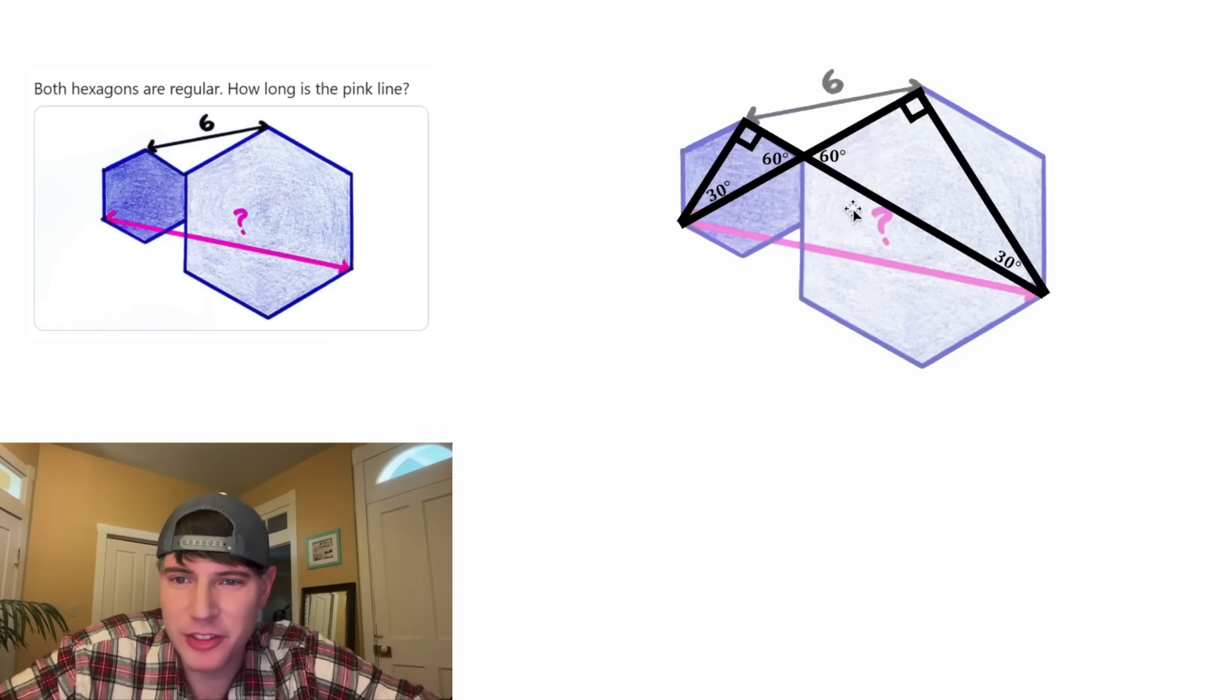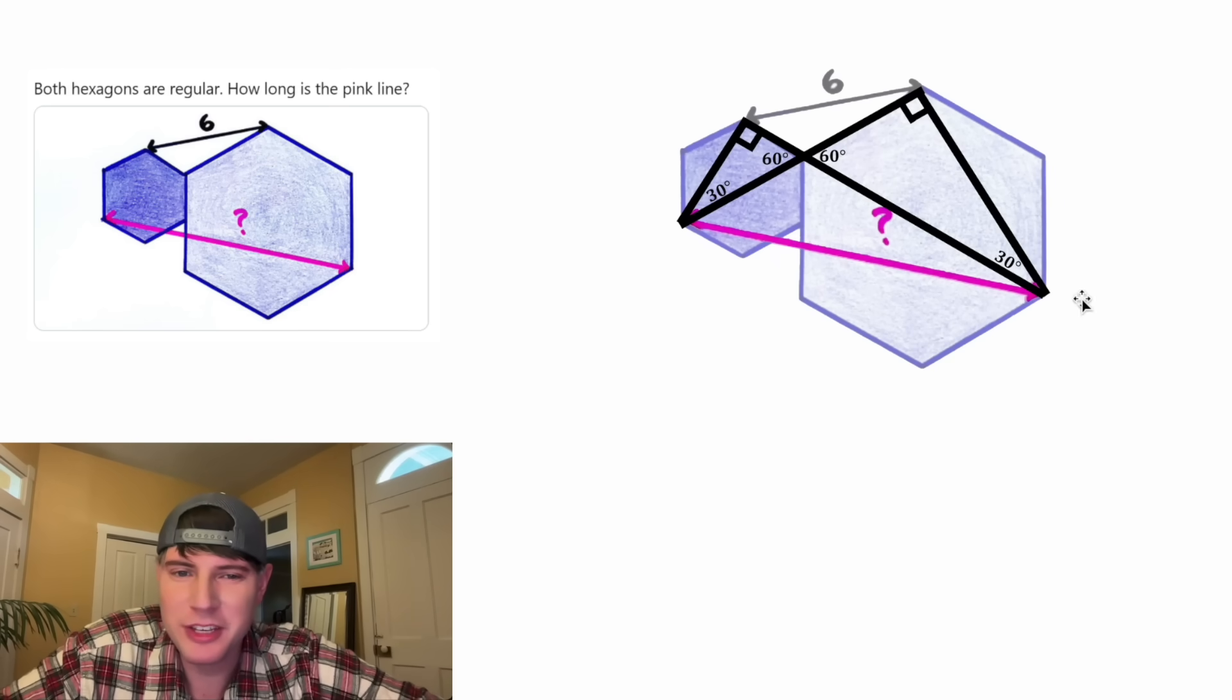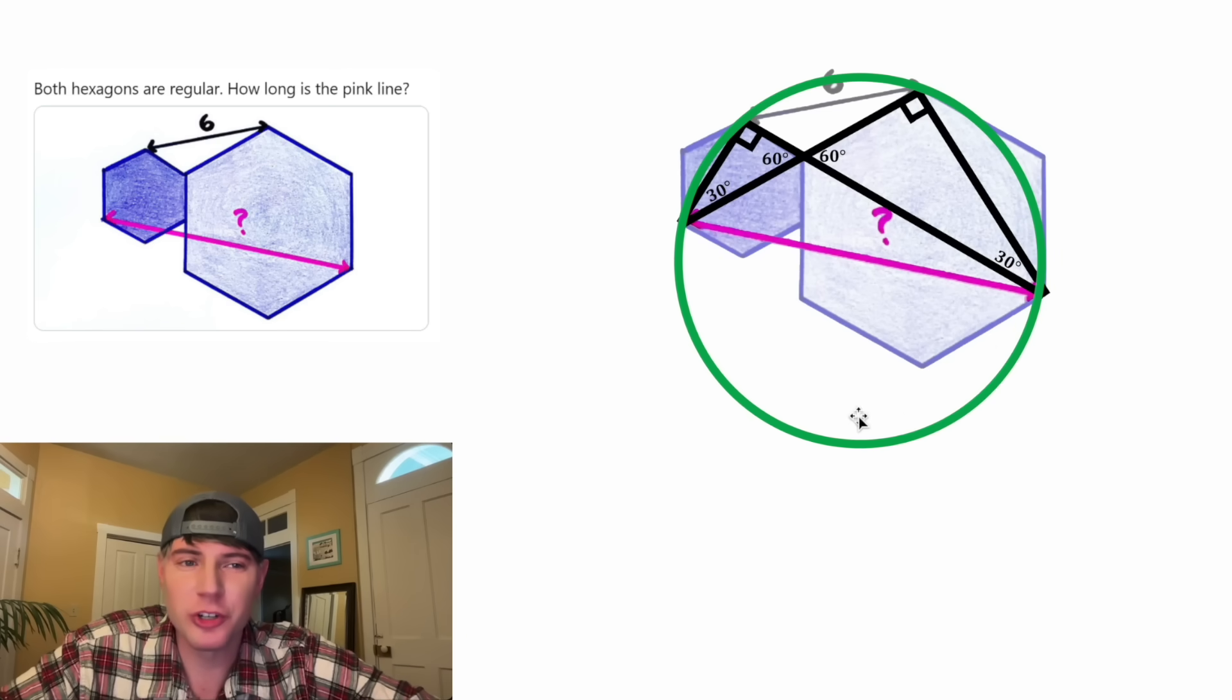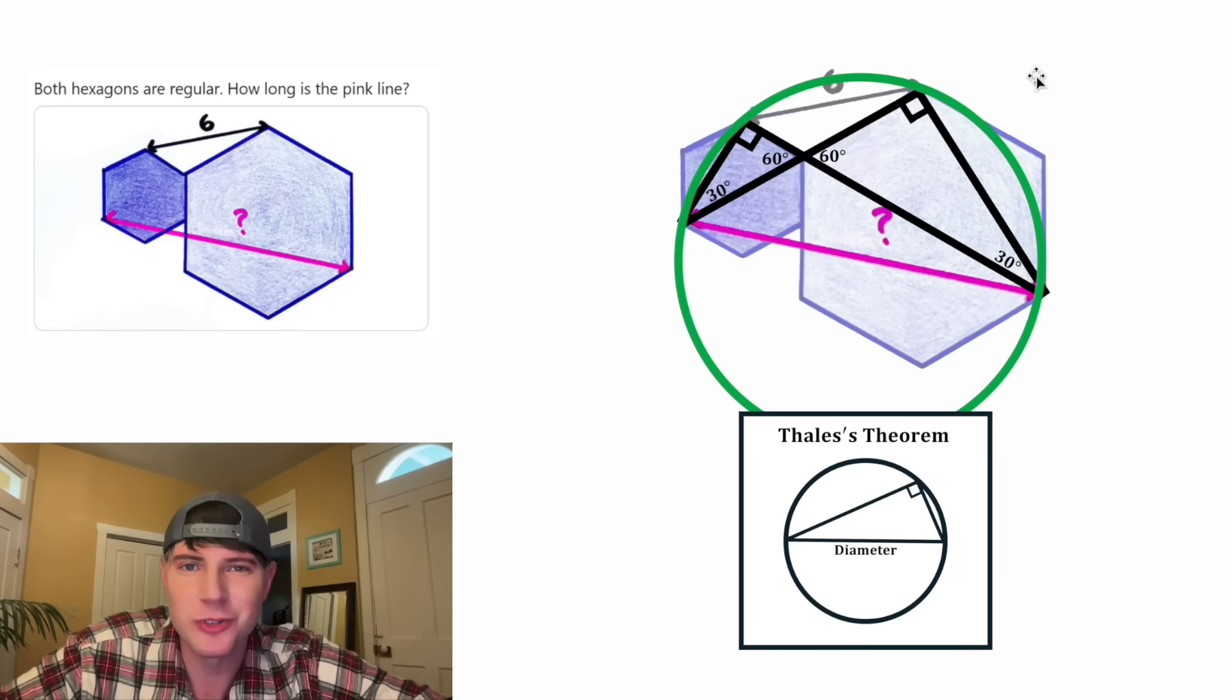And something else really cool is happening. Both of these right angles subtend this pink line. That means if we construct a circle with this diameter, it'll go through this point, this point, this point, and this point. And that's because of these notes right here.